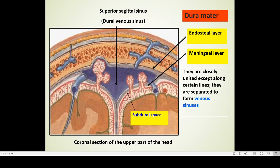In this diagram, the brain substance is shown here. The green color you are seeing is the pia mater, and here is the arachnoid mater. The arachnoid mater is sending arachnoid villi — projections from its surface which are protruding and invaginating into the dural venous sinus. The dural venous sinus is formed between the endosteal layer and the meningeal layer of the dura mater.